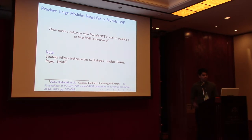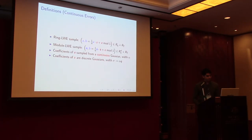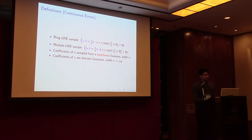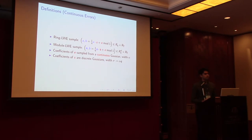When you allow yourself to change Q and alpha, you can go the other way. In the paper we show a reduction from module LWE in rank D and modulus Q to ring LWE in modulus Q to the D. The main analysis techniques are inspired by the classical hardness of learning with errors paper, so if you know that work, you'll see many parallels.